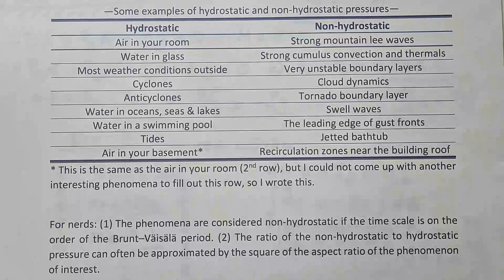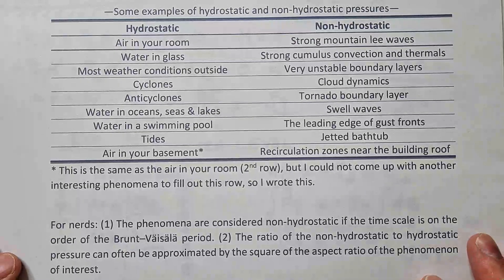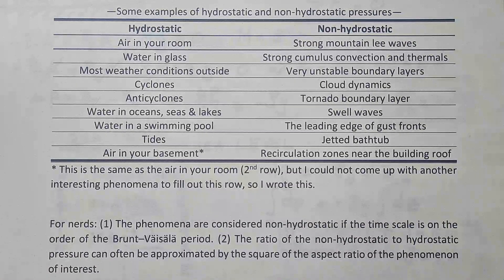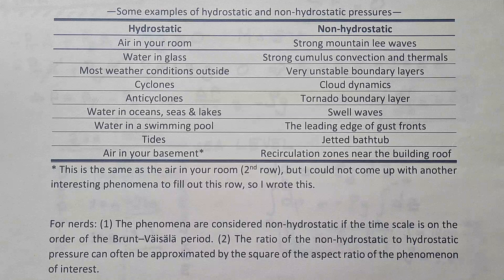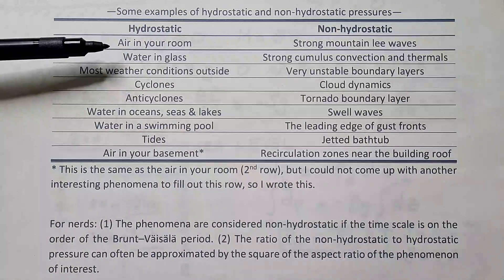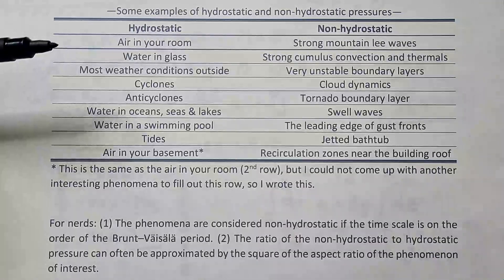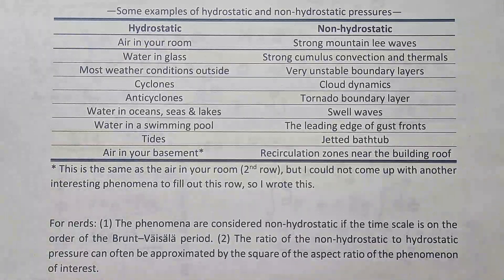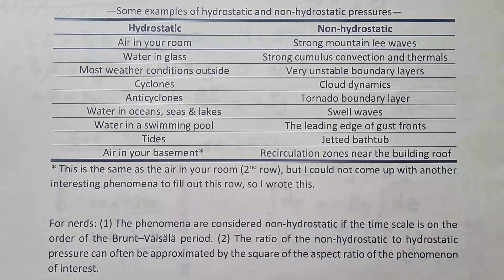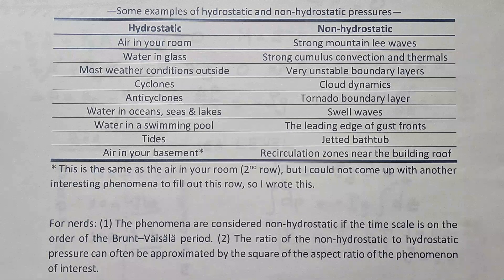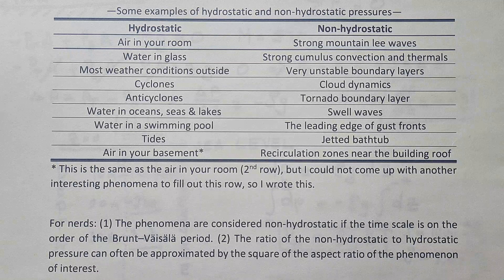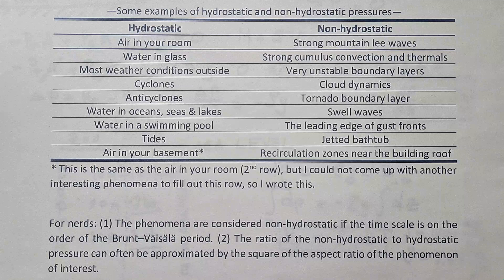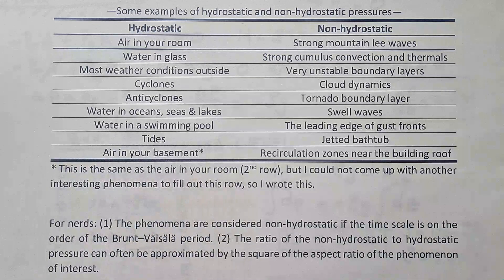Here I prepared for you a nice table where I listed some common phenomena in the atmosphere and oceans that are hydrostatic and non-hydrostatic. You can see that air in your room is hydrostatic, water in glass, almost all weather conditions outside, cyclone, anticyclones, these are all to very good approximation hydrostatic phenomena. For example, in cyclones, non-hydrostatic contribution is about 0.01%. So if we invoke hydrostatic approximation, that's highly accurate. Water in ocean, sea, lakes, and so on.